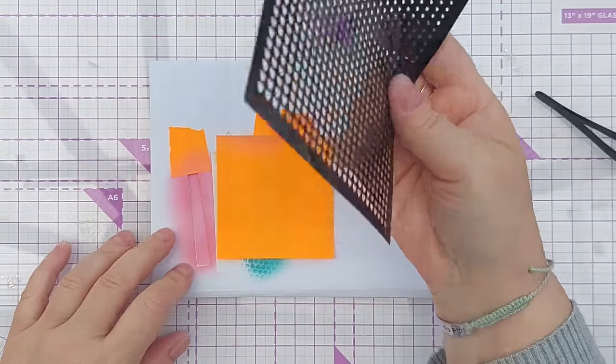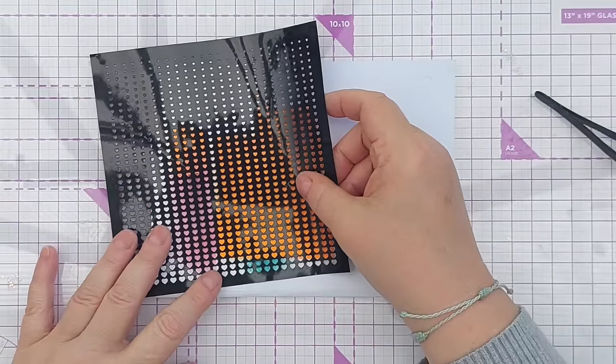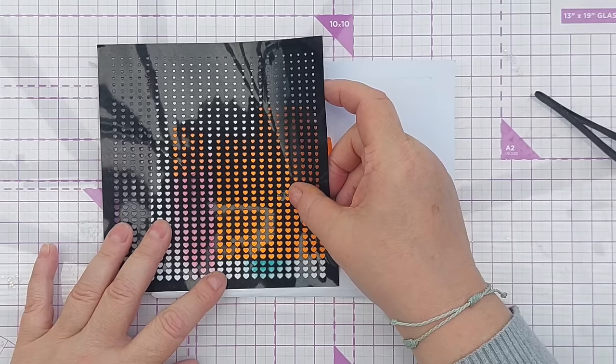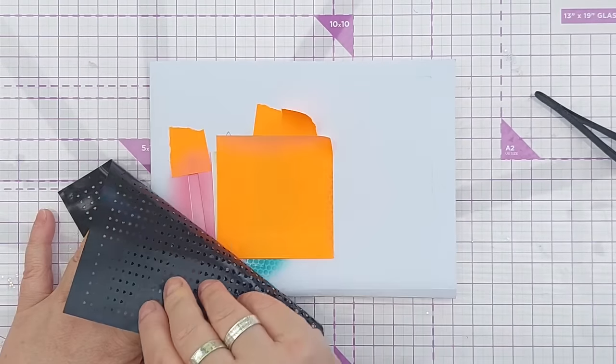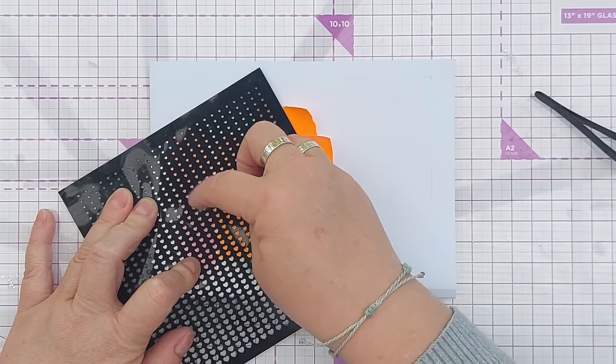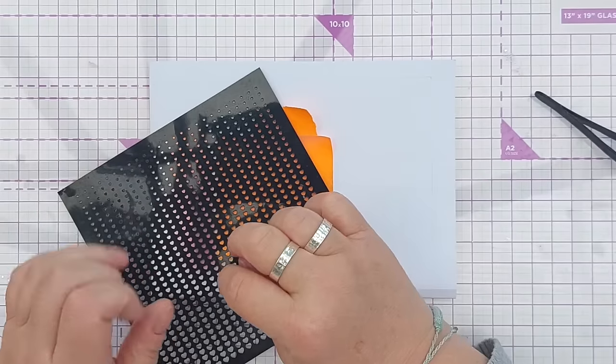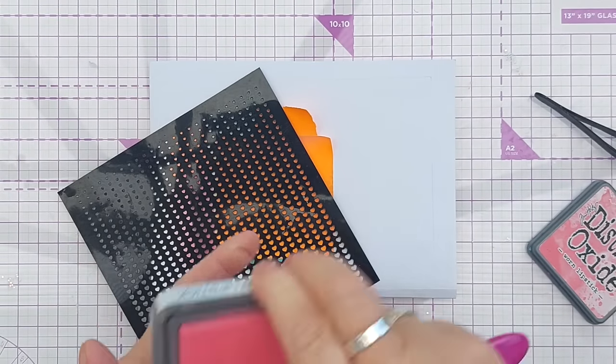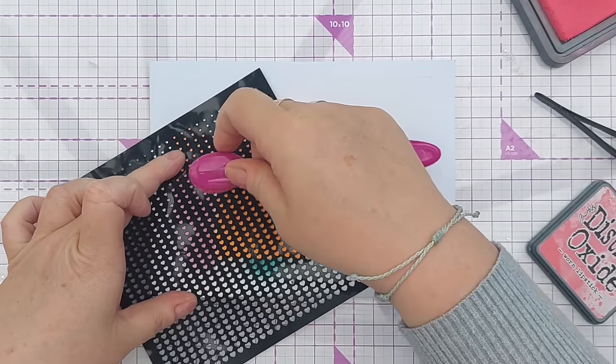And to my saltwater taffy candle I'm going to add some hearts. I think I'll do them at an angle like this so that you get lots of hearts on. For this I'm going to use worn lipstick, which will show up over saltwater taffy.